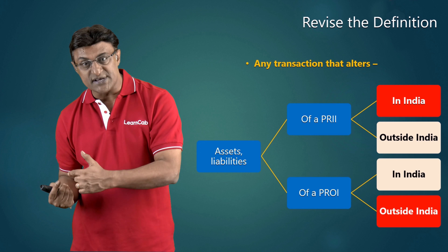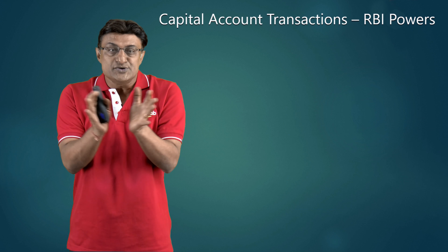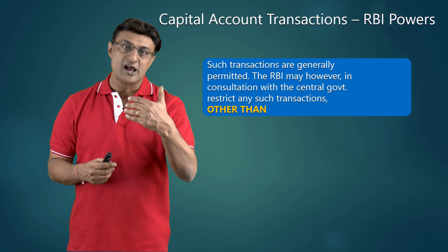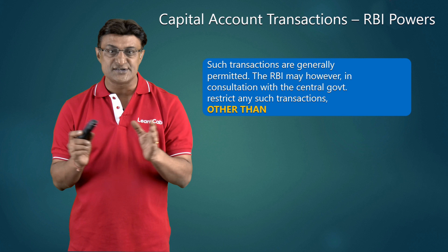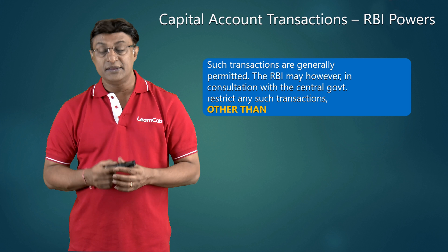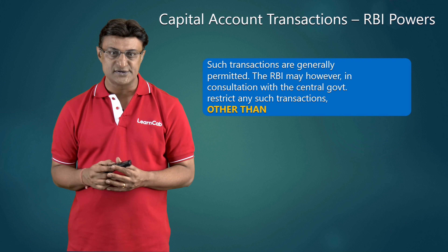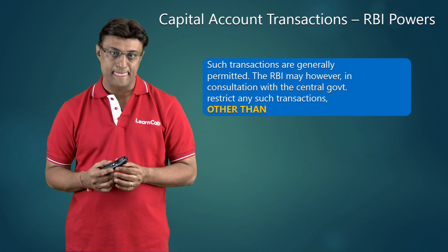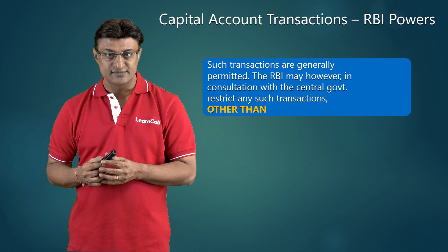Although we use assets and liabilities as a very large term, when you say assets and liabilities here, it includes loans, deposits, immovable property comprising land or buildings or both, plantation activities, transferable development rights, and Nidhi activities. These are certain things which are focused on, although we say generally assets and liabilities.